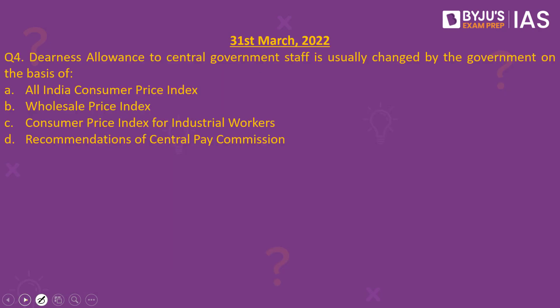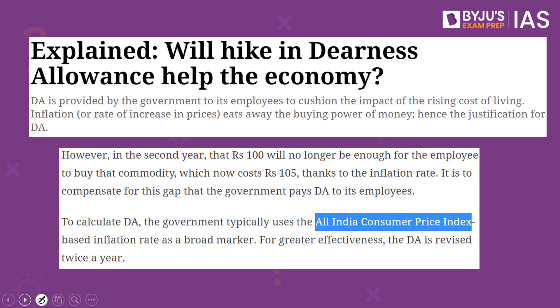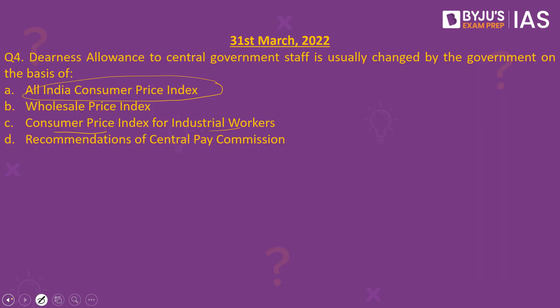This is a question from yesterday's daily quiz. Dearness allowance to central government staff is usually changed by the government on the basis of which index? The answer given was the All India Consumer Price Index. There is confusion among students who marked Consumer Price Index for Industrial Workers. We based our question on the Indian Express article, which clearly points out it is the All India Consumer Price Index, which is why that was the answer.